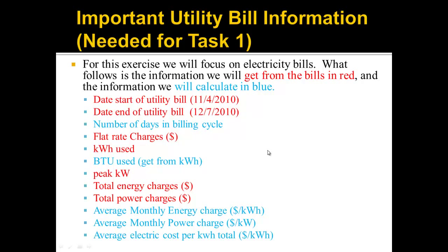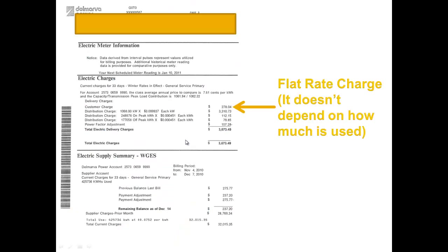Now let's look for the flat rate charges. Flat rate charges are charges that don't vary with how much electricity you use. In this case, it's called a customer charge. You can see there's no calculation after the customer charge, and that's how you know it's a flat rate charge. Sometimes you'll have a flat rate charge in your electric supply down here as well, but here we can see there's no calculation, and that's the only flat rate charge we have.